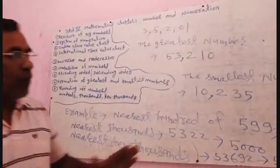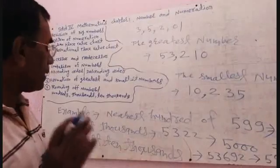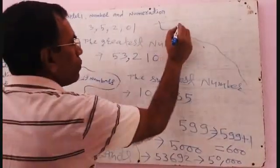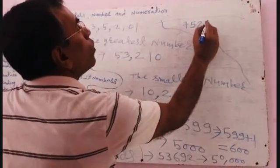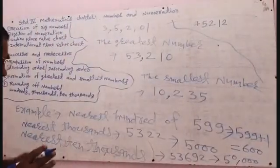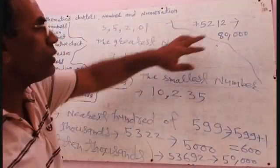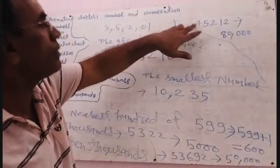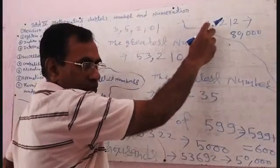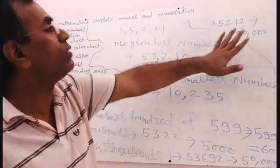But if you find five or more than five in the thousands digit, then you add one to the ten-thousands. For example, take the number 75,212. I want to write the nearest ten-thousand. The thousands digit is 5 — five or more than five — so I add one and write all other digits as zero. The nearest ten-thousand of 75,212 is 80,000.